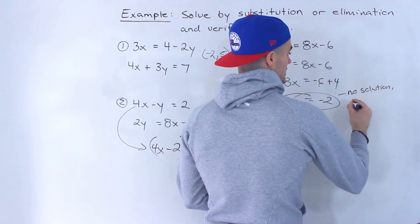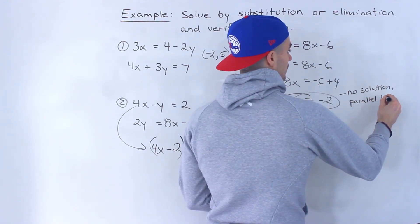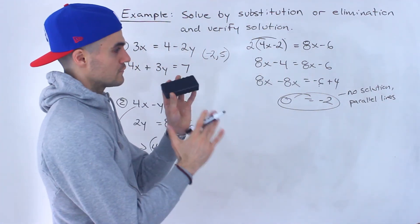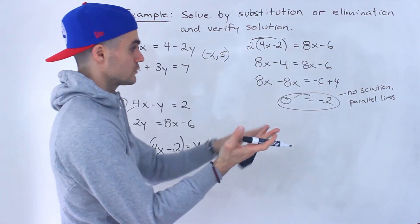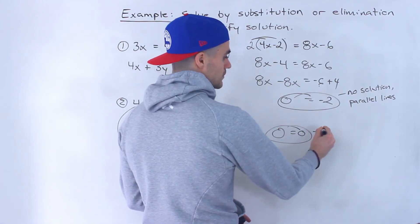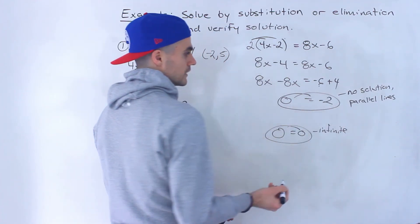And no solution means that they are parallel lines. Parallel and distinct lines because you could have parallel lines and they could be the same line. That would be infinite solution, if it was 0 equals 0. Whenever you get 0 equals 0, that means there's infinite solutions. Whenever you get 0 equaling a number, notice that can never happen.